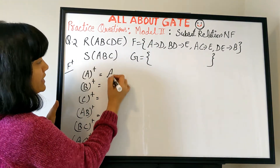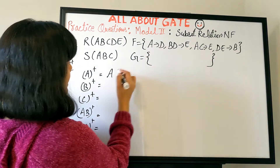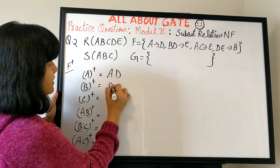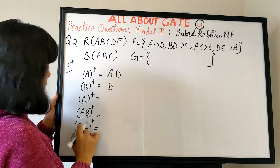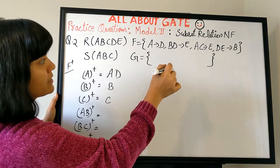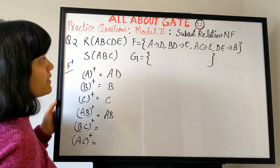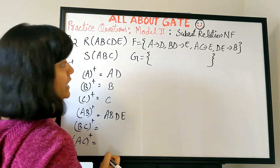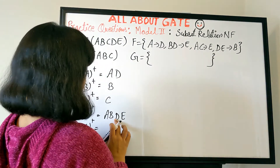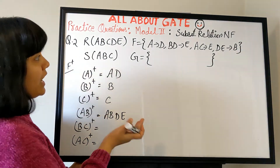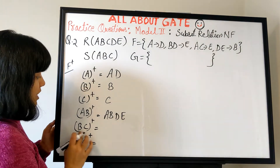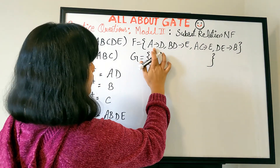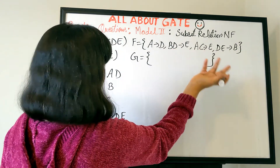A+ from here gives A, and through A we get D — but nothing else. So A+ = {A, D}. B+ gives only B. C+ gives only C. AB+ gives A, B, and D through A. With B and D we get E. With D and E we get B — already present. We are not getting C. So AB+ = {A, B, D, E}. BC+ gives B, C. B needs D, C gives A — but we can't reach them, so BC+ = {B, C}.